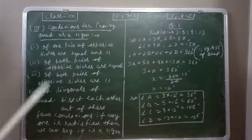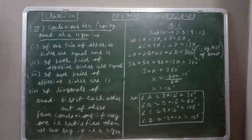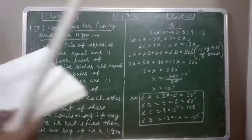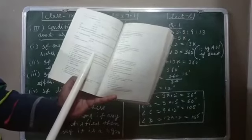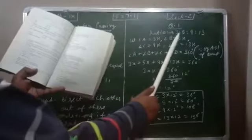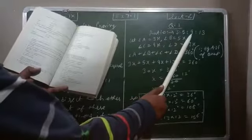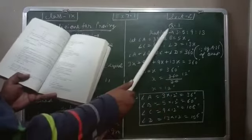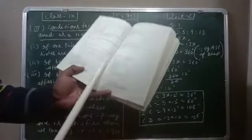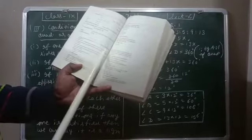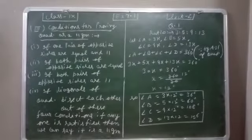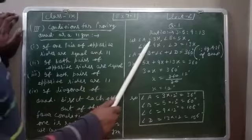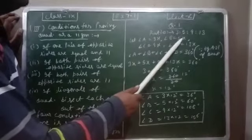Now we start the questions of Exercise 7.1. The first question: the angles of a quadrilateral are in the ratio 3:5:9:13. Find all the angles of the quadrilateral. Since the ratio is given, let angle A = 3x, angle B = 5x.